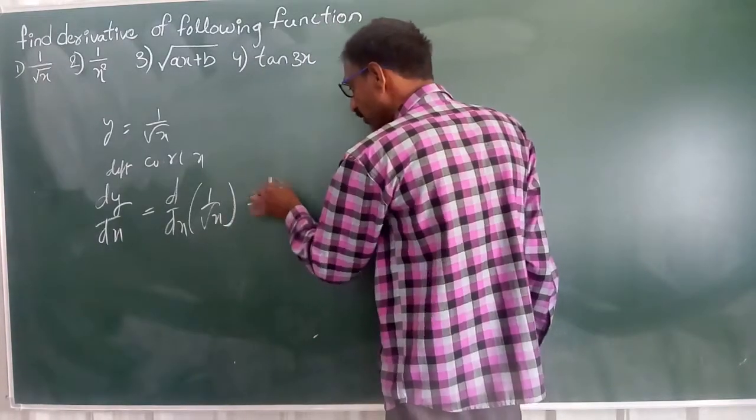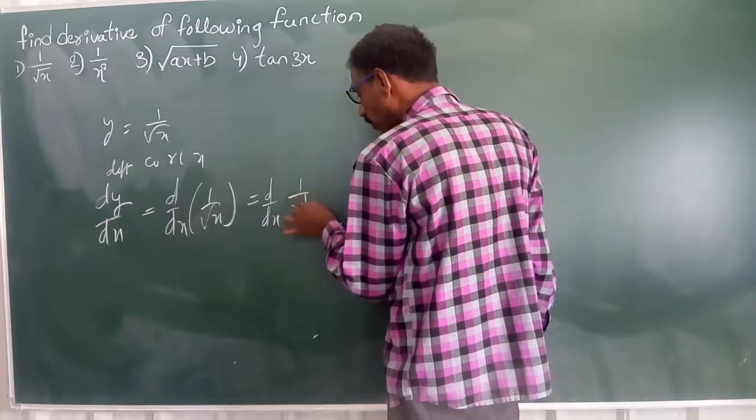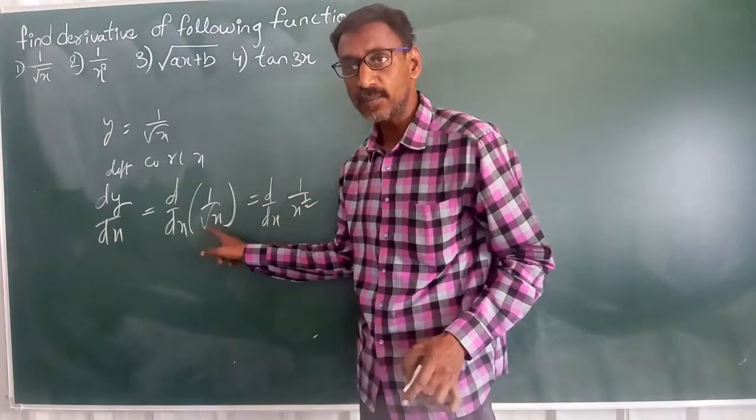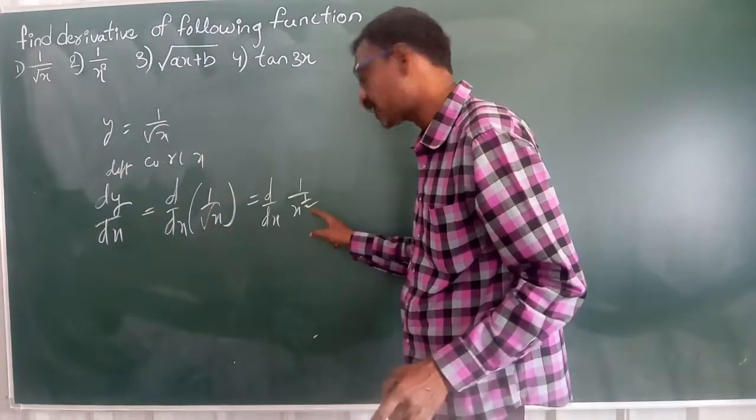This is equal to d by dx of 1 by x to the power 1 by 2. Can I write this? Root x is nothing but x to the power 1 by 2. This is radical form. This is exponential form.